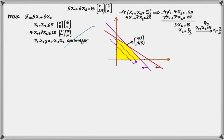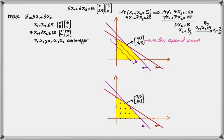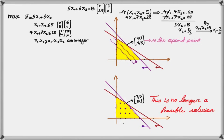However, we don't have a typical linear programming problem here. Now we're back to the initial problem where x1 and x2 must be integers. That means the solution space changes — no longer is any point inside the yellow region a feasible solution. Only integer points such as (1,1), (1,2), (1,3) and so forth are feasible. As a result, the optimal solution we found by relaxing the integer assumption, 7/3 and 8/3, is no longer feasible because it is not an integer solution.